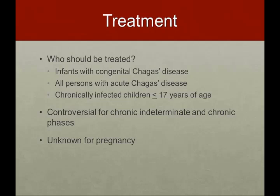Who should be treated? Three groups are especially advised: infants with congenital Chagas disease who received it from their mother, all persons with acute Chagas disease, and chronically infected children who are 17 years of age or younger — because those with chronic disease have a higher chance of developing complications later in life. There is controversy on whether to treat patients in the chronic indeterminate or chronic phases, given the length of treatment — 90 to 120 days versus 60 days — and the somewhat severe side effects. For pregnancy, it's unknown whether treatment is harmful or beneficial.